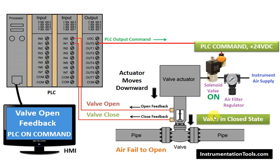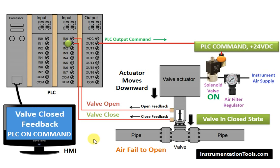So, now this change will happen. The corresponding proximity switch will be activated and send a signal to the PLC. In this case, the valve changes to closed state. So, it will send a closed feedback to the PLC. The PLC will take the closed feedback and update the graphics accordingly. Previously, the valve was shown as open in the HMI. As the signal changes, it will change from valve open to valve closed feedback. So, closed feedback is received.